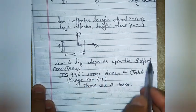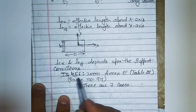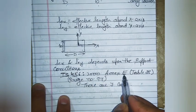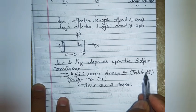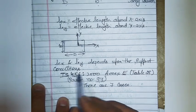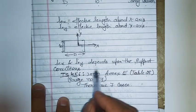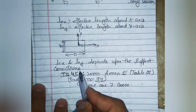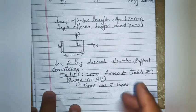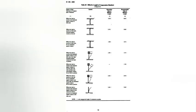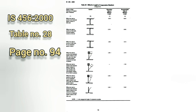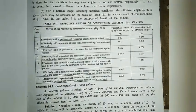lex and ley depend upon the support conditions. As per IS 456:2000, Annexure E, Table 28, page 94, there are seven cases related to support conditions. I am going to give a brief detail about these seven cases represented in Table 28 of IS 456:2000 at page 94.